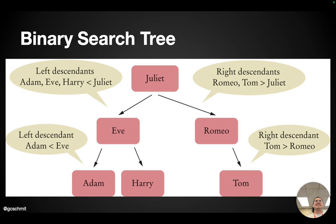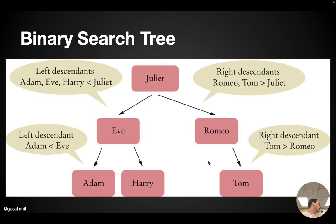It's sorted, right? So all the left descendants come before Juliet, and all the right descendants — Romeo and Tom — come after Juliet. We can store information in a binary search tree and find elements extremely quickly.